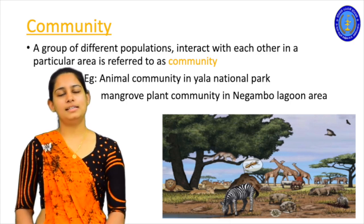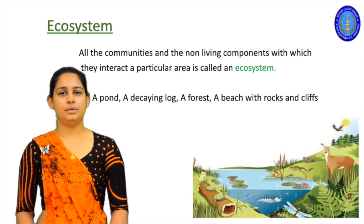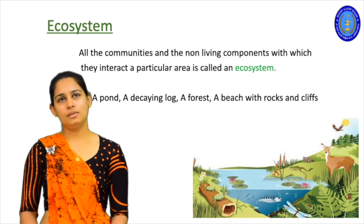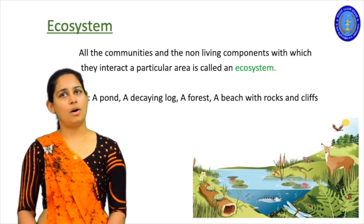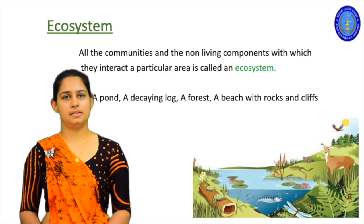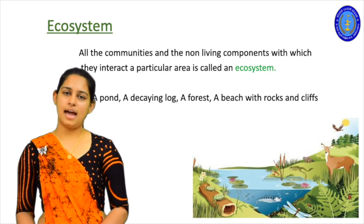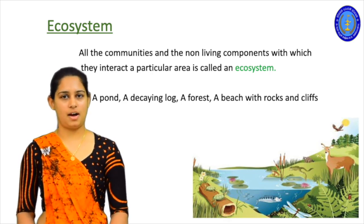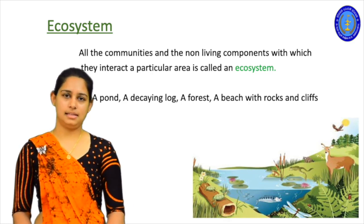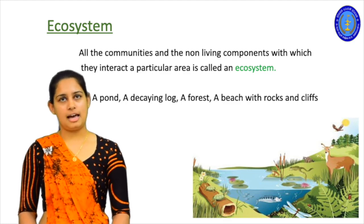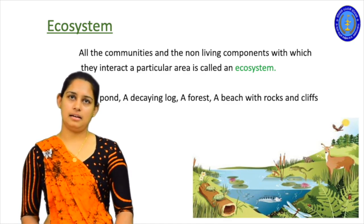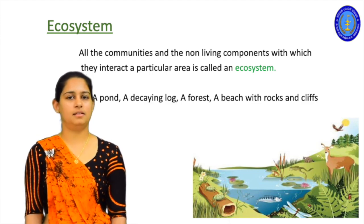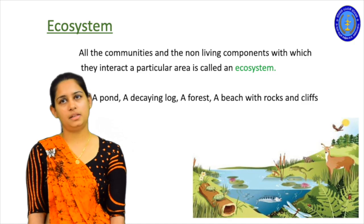The next organizational level is ecosystem. You have already heard this word because when learning about the environment we use it most of the time. An ecosystem means all the communities and the non-living components with which they interact. When communities live in the environment they have interactions with the non-living or physical components, and we call that an ecosystem. The definition is: all the communities and the non-living components with which they interact in a particular area is called an ecosystem. Examples include a pond, a decaying log, a forest, a beach with rocks and cliffs, or grasslands.